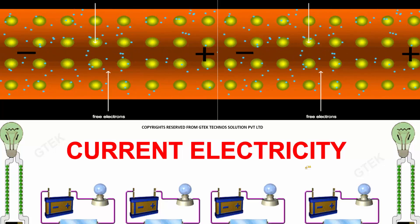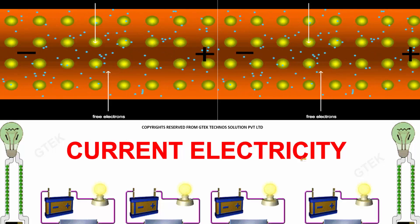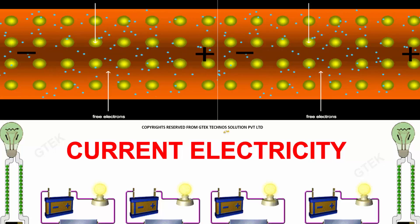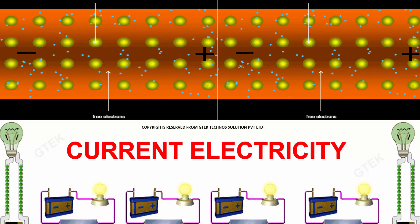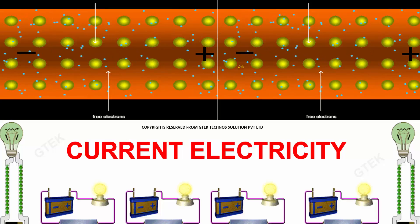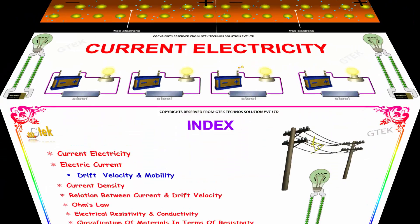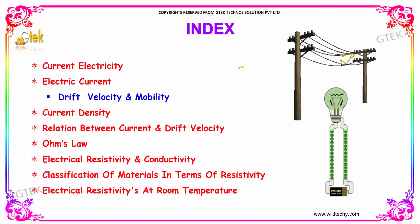Let's move on to an interesting area: current electricity. Now we are going to see those areas. This is the index of our program — we will be covering current electricity details, electric current and drift velocity and its mobility, current density, the relationship between current and drift velocity, Ohm's law, electrical resistivity and conductivity, classification of materials in terms of resistivity, and electrical resistivity at room temperature.